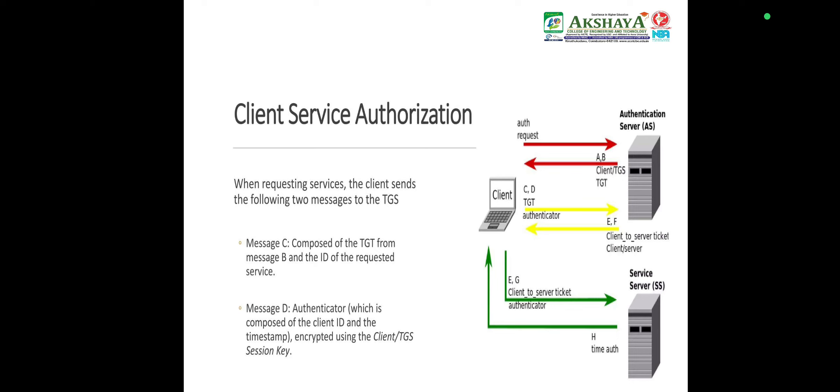Client-server authentication: When requesting services, the client sends two messages to the TGS. Message C: composed of the TGT from Message B and the ID of the requested service. Message D: an Authenticator composed of the client ID and timestamp, encrypted using the Client-TGS session key.